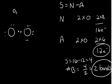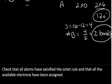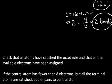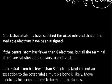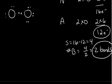So according to the rules, it says check that all atoms have satisfied the octet rule and that all the available electrons have been assigned. If the central atom has fewer than 8 electrons but all the terminal atoms are satisfied, add electron pairs to the central atom. We can't do that, we're out of electron pairs. If the central atom has fewer than 8 electrons and it's not an exception to the octet rule, a multiple bond is likely. Move electrons from the outer atoms to form multiple bonds. So in this case, we know that we should have 2 bonds. We know that we've not satisfied. So what you can do is move a pair of electrons from an outer atom to make a multiple bond.